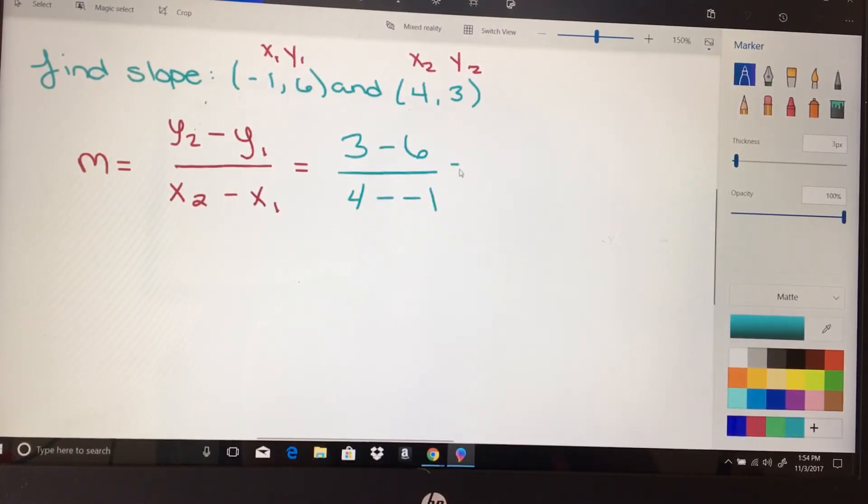So in the top I have 3 minus 6, which gives me a negative 3, and then 4 minus a negative 1, that minus negative there will become positive. So I have negative 3 over 5. So we would just type in there, negative 3 over 5.